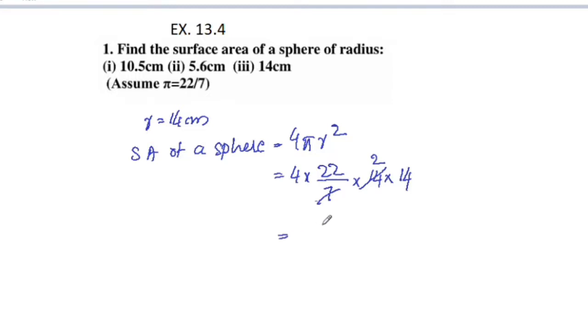We cancel 7 with 14, leaving 2. So the expression becomes 22 into 4, which is 88, then 88 into 2.